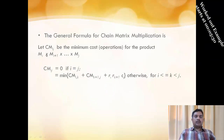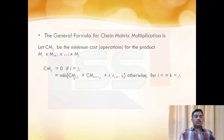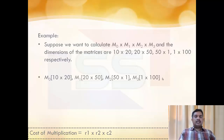In the generalized formula, if C[i][j] is the cost of multiplication when we multiply matrices Mi through Mj, then the cost is 0 if i equals j. Otherwise, we take the minimum over k of: cost(i,k) + cost(k+1,j) + Ri × R(k+1) × Cj, where k lies between i and j.